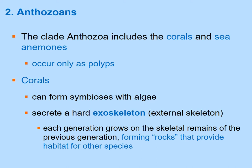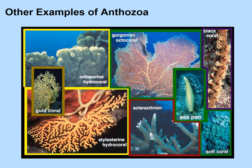Anthozoans occur only as polyps and include corals and sea anemones. Corals can live in a symbiotic relationship with algae, which provide food as autotrophs. Corals secrete a hard exoskeleton; each generation grows on the remains of the previous generation's skeleton, forming coral reefs. These reefs provide habitat for many other species including fish.